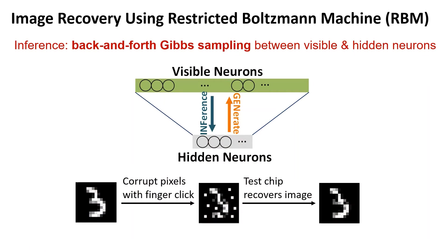The image recovery is performed using a restricted Boltzmann machine model. The weights of the model are mapped onto the chip using two different weight mapping schemes. The details of the weight mapping schemes can be found in our paper.